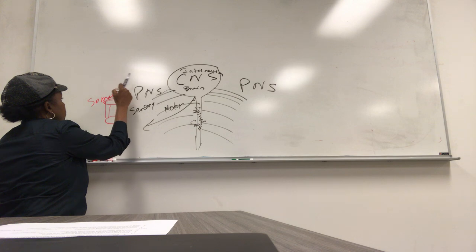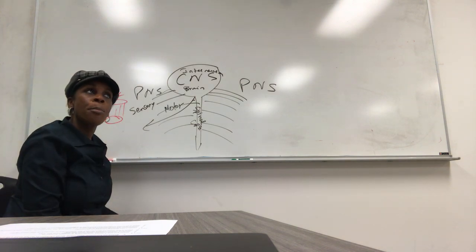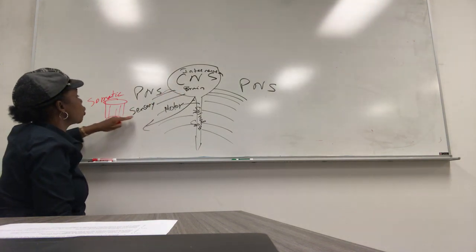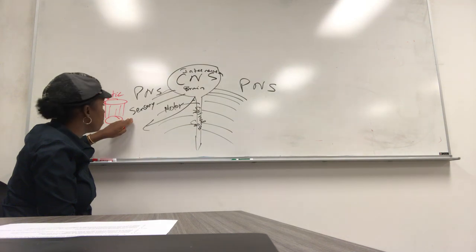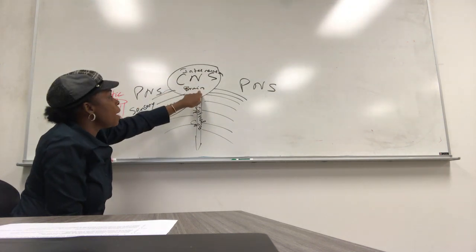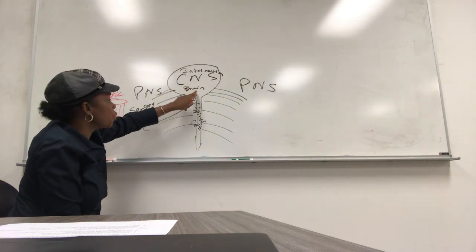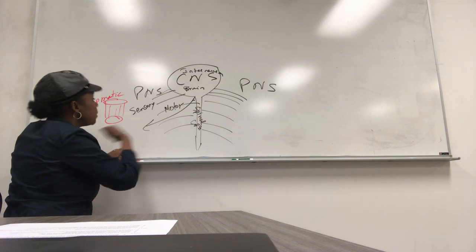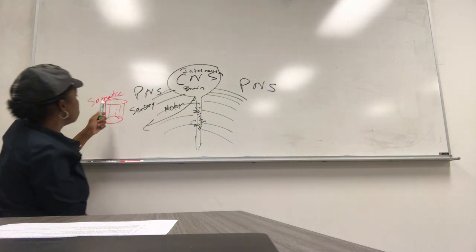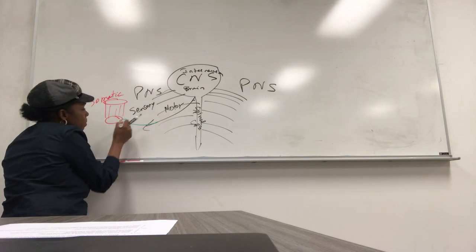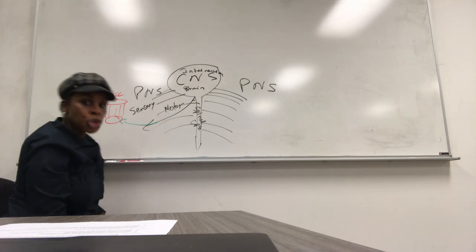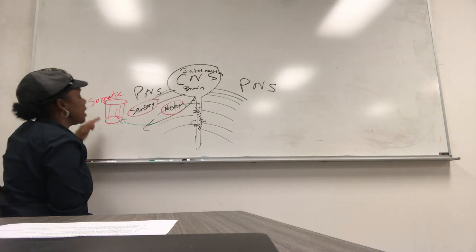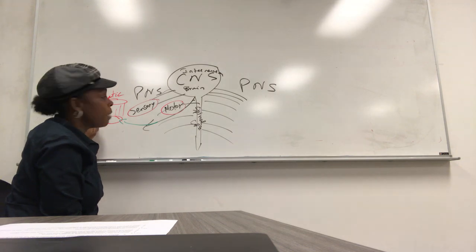The somatic sensory neuron receives information from the muscle and sends it to the brain. Interneurons process the information and give the command. If the command comes back to the same muscle, it will be the somatic motor neuron. So we have somatic sensory neuron and somatic motor neuron — because it comes from a muscle and the command is given back to the muscle.